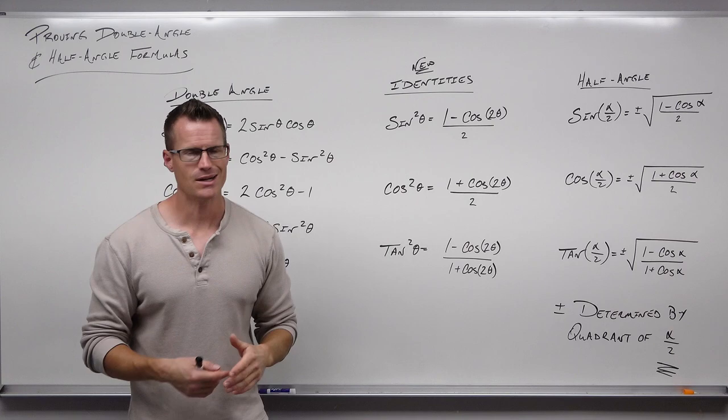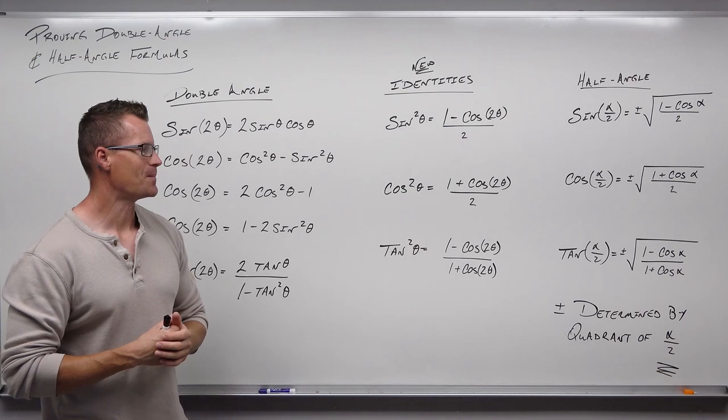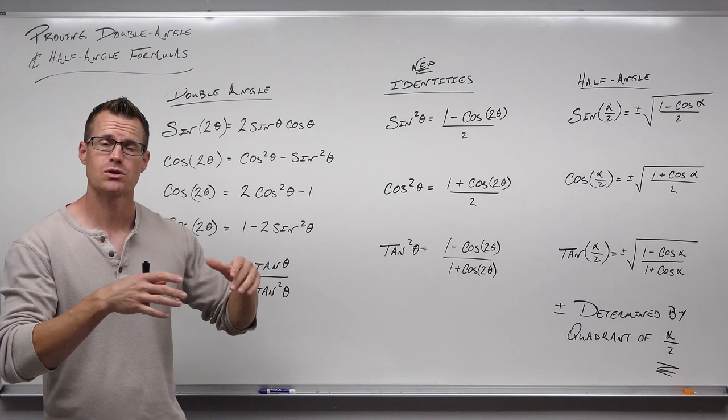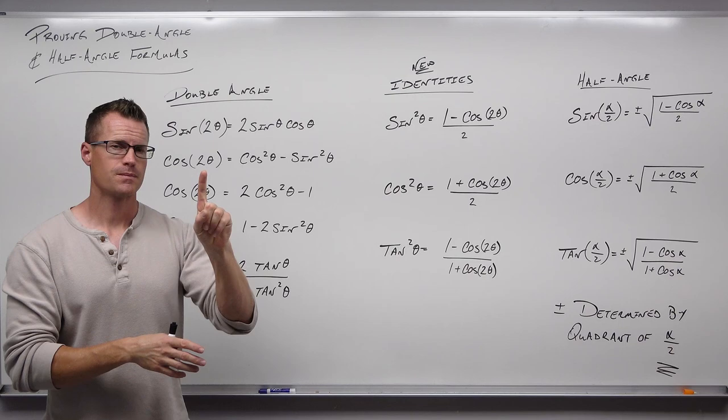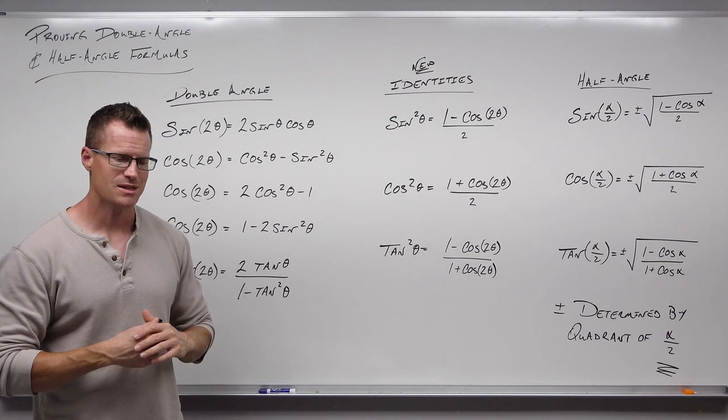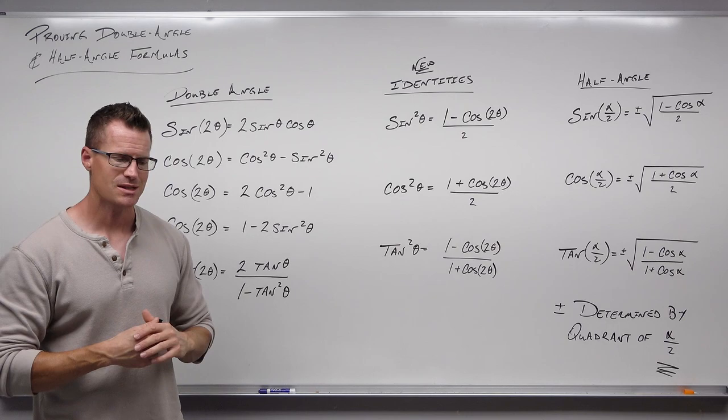I hope that made sense. It's a lot of proofs without many examples, but I think the proofs are interesting and it's valuable to know where this stuff comes from. Everything here stems from two ideas: the sum formulas and the Pythagorean identities, then just taking square roots. In the next video, we'll start some basic examples, move on to some identities, and then some equations at the end. Hope you're doing well.